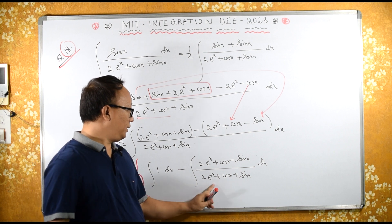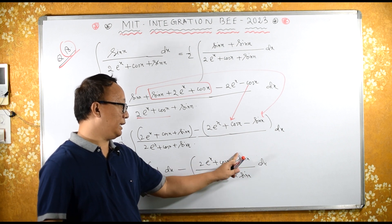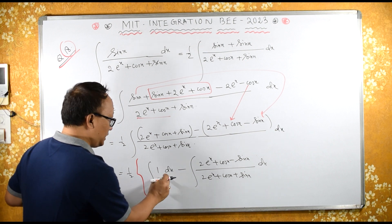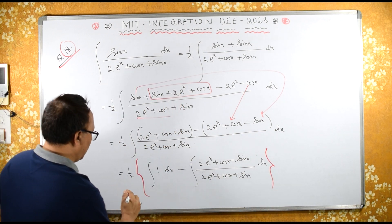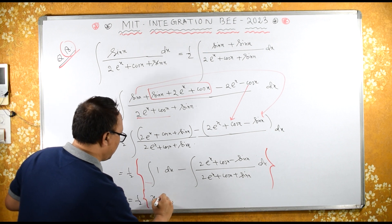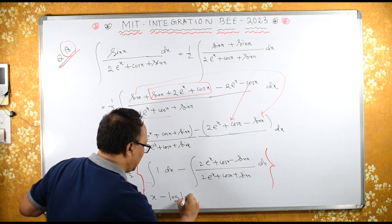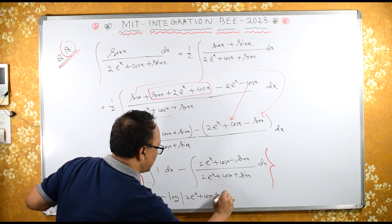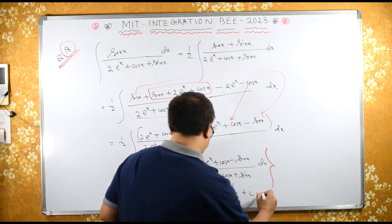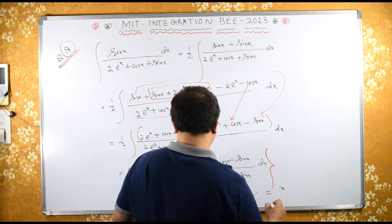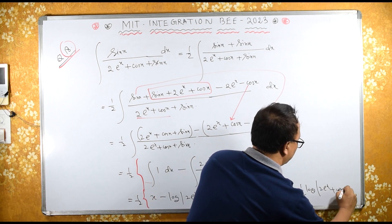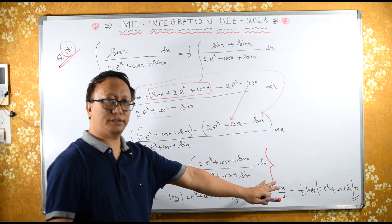Check: the differentiation of 2e raised to x plus cos x plus sin x gives 2e raised to x minus sin x plus cos x, which is exactly the numerator of the second integral. Therefore that is log of this denominator. So bracket close — this equals half times x minus log of (2e raised to x plus cos x plus sin x) plus C. Or you can write it as x/2 minus (1/2) log of (2e raised to x plus cos x plus sin x) plus C.